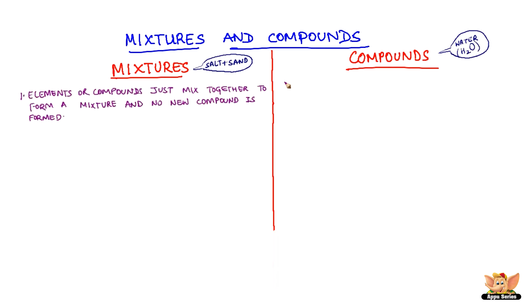Elements or compounds mix together to form a mixture and no new compound is formed. Whereas in the case of compounds, elements react to form new compounds.